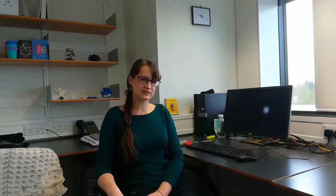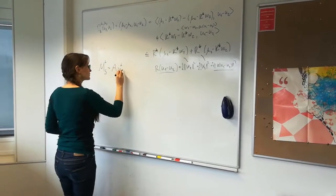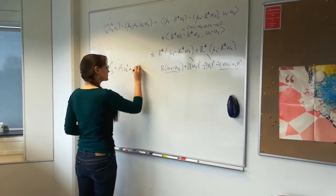So basically anything where you have some unknown that you would like to recover, but you can't observe it directly — you can only observe some indirect measurements of it. For example, if you have a blurred image, you would like to get a sharp image out of it. That's an inverse problem. Whereas a direct problem would be if you're given a sharp image, blur it a little bit — which is really easy.